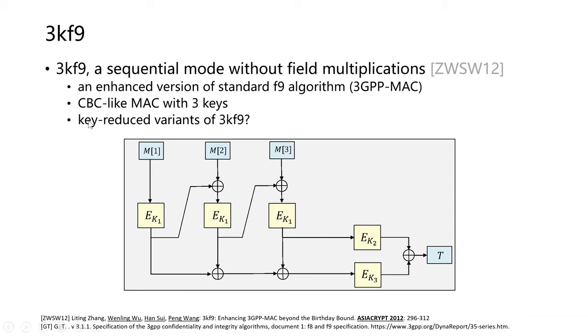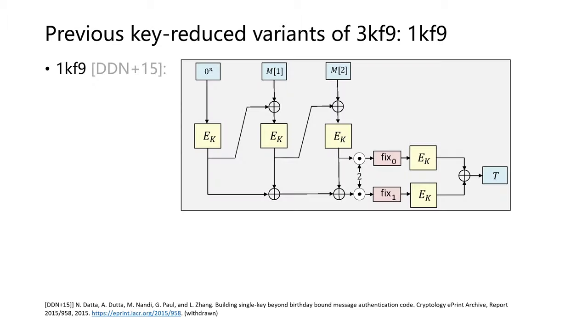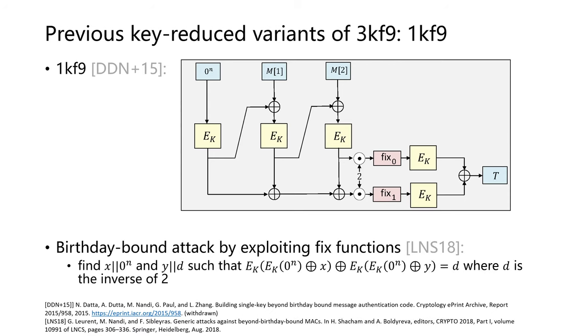Reducing the number of keys in 3kf9 is a challenging problem. Two variants, 2kf9 and 1kf9, were proposed to reduce key size for efficiency. But recently for 1kf9, Leurent et al. proposed a birthday-bound attack by exploiting the fixed function.